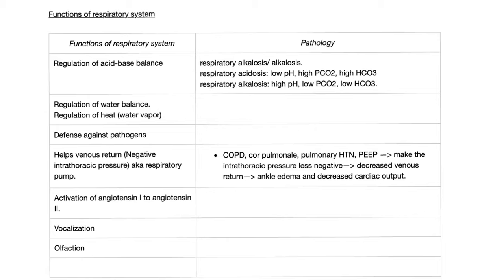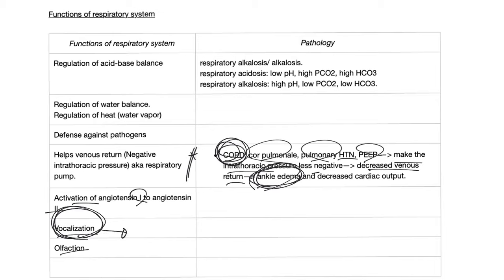Functions of the respiratory system. This is so easy. Regulation of acid-base balance. Regulation of water balance. Defense against pathogens. Help venous return, also as respiratory pump, because the negative intrathoracic pressure in the pleura is negative, so it sucks blood up. So, let's say COPD, cor pulmonale hypertension, or PEEP, positive end expiratory pressure. It will make the intrathoracic pressure less negative. Decrease venous return. It can lead to ankle edema. That's why a patient with COPD can get ankle edema. So, your ankle is very low there, and your lung is up there, but they are related to each other. Welcome to internal medicine.